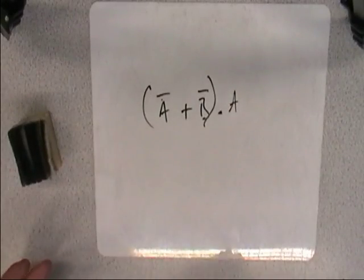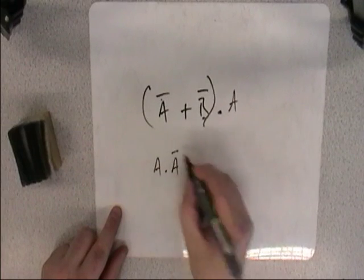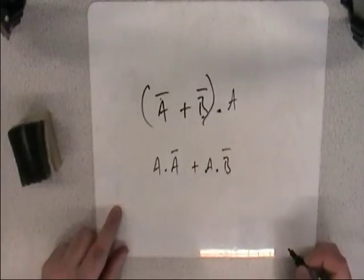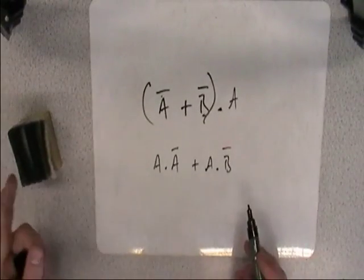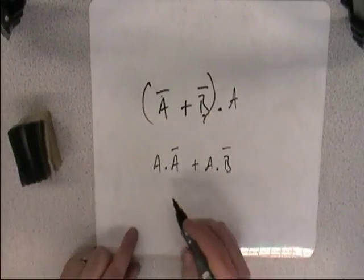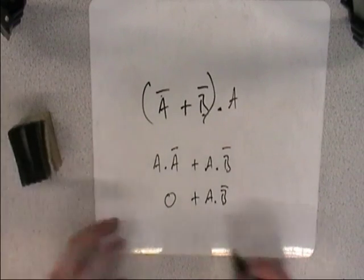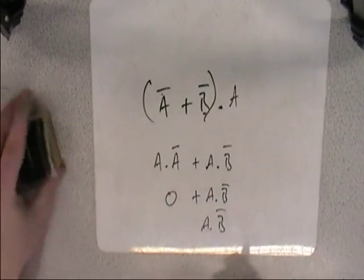So what we can do is... I don't know, we can multiply that out. So we've got A and NOT A, or A and NOT B. It doesn't really help with De Morgan's laws, actually, because A and NOT A, that's always going to be false. It can't be A and NOT A at the same time. So that's zero plus A and NOT B, which just becomes A and NOT B.